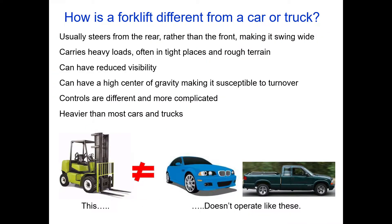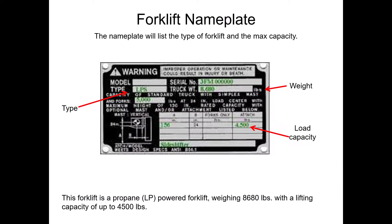How is a forklift different from a car? Forklifts steer from the rear, causing the rear end to swing wide. They carry heavy loads in tight spaces and have reduced visibility. They cannot have a high center of gravity, especially with a raised load — making them susceptible to turnover. Controls are more complicated than a car, and forklifts are heavier than most cars and trucks. That's why there's a training program in place.